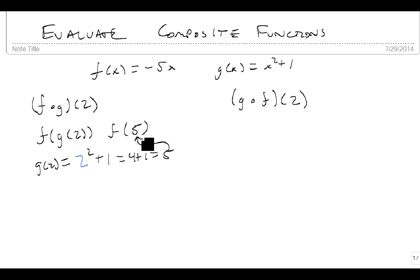Notice I just took that output and plugged it in right there. Well f of 5 is equal to minus 5 times 5, which is minus 25. So the final answer to this composition is negative 25.